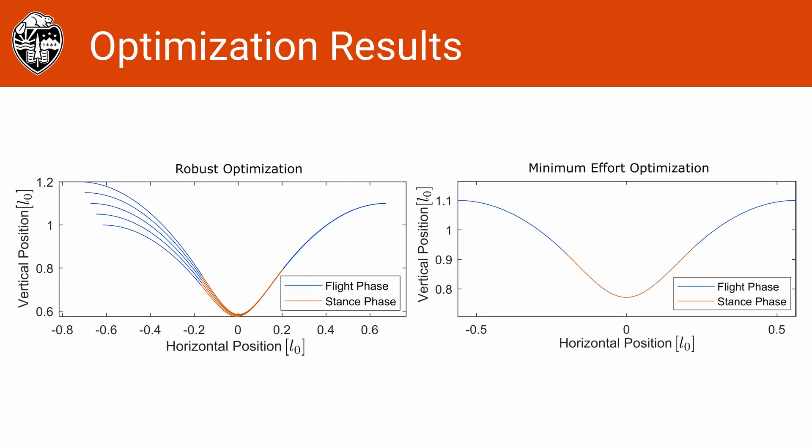Let's compare this to the minimum effort optimization. We can see that the robust optimization lets the body drop much lower than the minimum effort optimization. I think this is because the minimum effort optimization is using the damper in the leg to regulate the amount of energy in the system, and a longer, lower stance phase helps it do that.